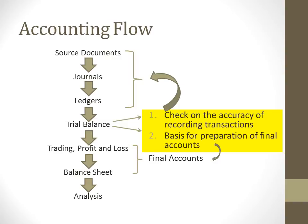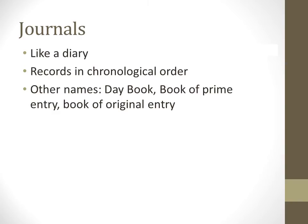The accounting flow says that after source documents, we move on to record them in the journals. Journals are like diaries — you record transactions in chronological order. Some other names they can have are day book, book of prime entry, or book of original entry.